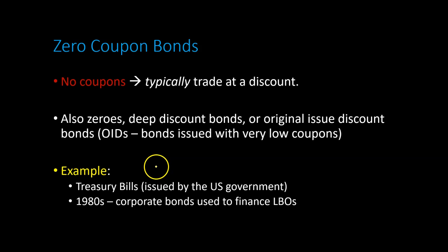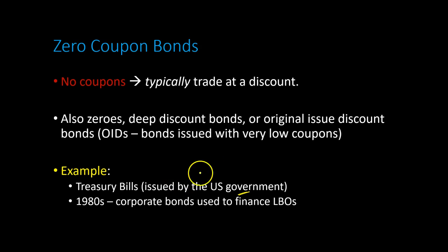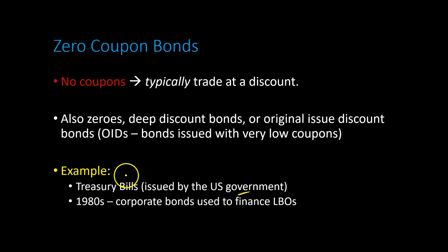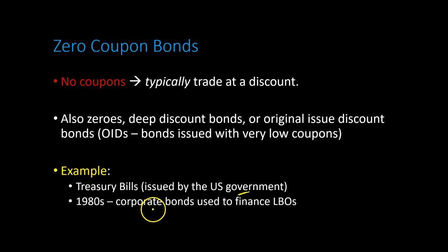One example of a zero-coupon bond is what is called the Treasury Bill — essentially a bond issued by the U.S. government with a time-to-maturity of one year or less. In the 1980s, a lot of corporations also used to issue zero-coupon bonds. They would typically use that borrowed money to finance the acquisition of other companies in what are called leveraged buyouts, which is a whole different topic.